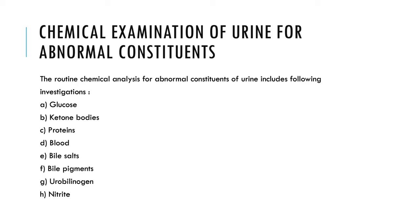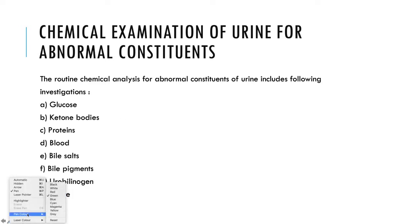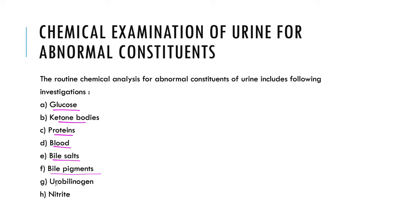When doing the chemical analysis of urine, the different chemicals you can detect include glucose, ketone bodies, protein, blood, bile salt, bile pigment, urobilinogen, and nitrite. These are very important chemicals that we have to detect in the urine, because by detecting these chemicals, we can diagnose different kinds of endocrine problems, metabolic problems, and kidney problems of our body.